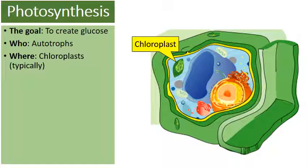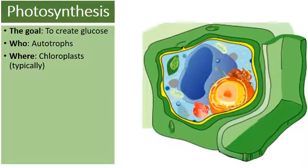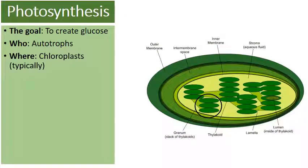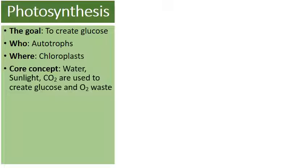Where does photosynthesis occur? Generally speaking, it occurs in this organelle called a chloroplast. I say generally because I'm talking about plant cells and algae cells — eukaryotic cells. There are some prokaryotes, the cyanobacteria, that can do photosynthesis, and bacteria do not possess chloroplasts. But generally speaking, photosynthesis occurs within the chloroplast of cells.